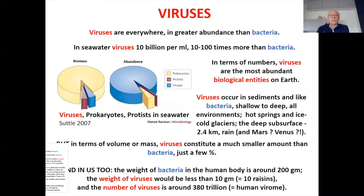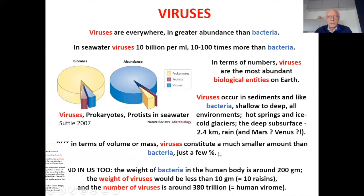Viruses are absolutely everywhere — completely everywhere, in greater abundance than bacteria. Normally something like 10 times the number of bacteria, you've got viruses. In terms of numbers, viruses are the most abundant biological entities on Earth. In terms of abundance, the blue are the viruses; the yellowish are the bacteria and archaea. Viruses occur everywhere in sediments — shallow ones, deep ones, cold ones, hot ones — and in the deep subsurface as well, recorded down to 2.4 kilometers. We even get viruses in the rain. You do wonder: if there's life on Mars, are there viruses on Mars?